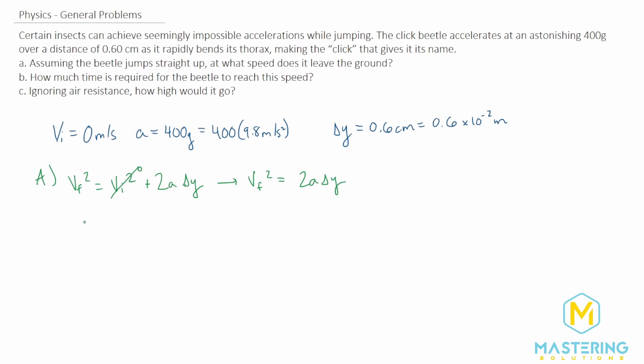And for part A, what we're trying to find is the final velocity. Since it's already set up for that, it's pretty easy. Now we just have to take the square root of both sides. So v final is equal to the square root of 2 times the acceleration times the change in y.